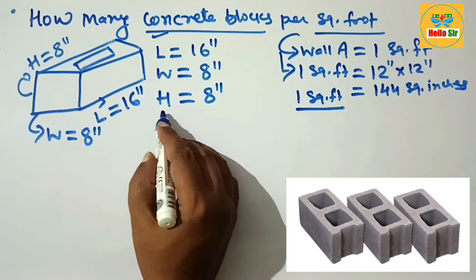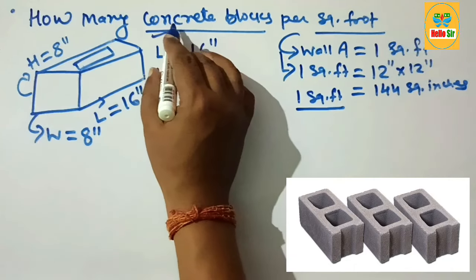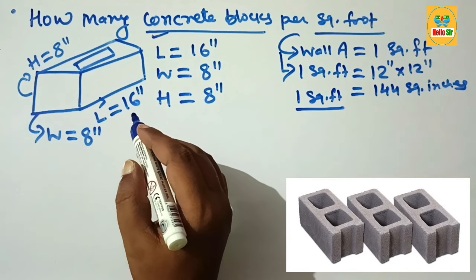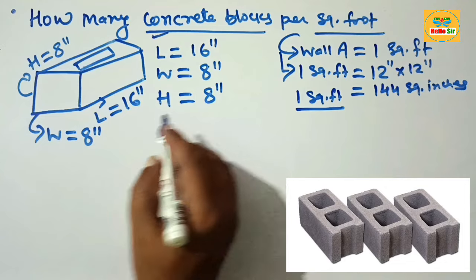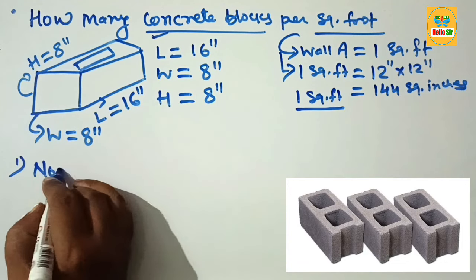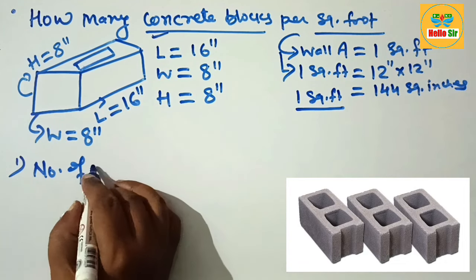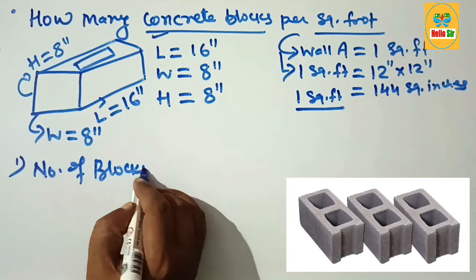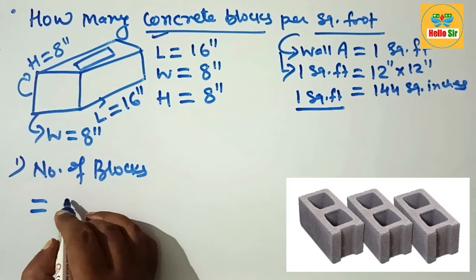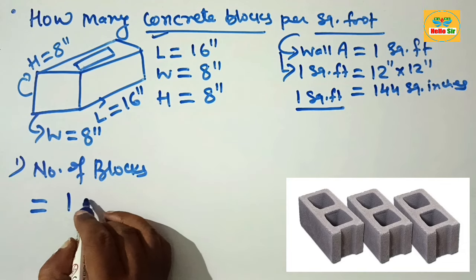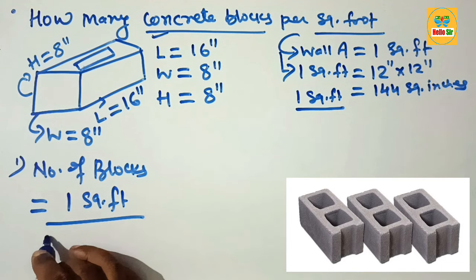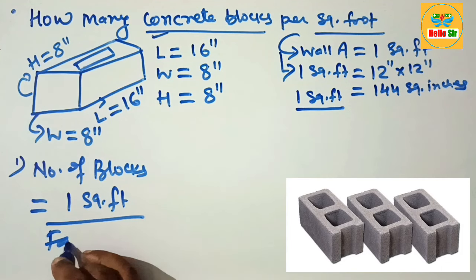To calculate the number of concrete blocks per square footage, use this formula: Number of blocks = Area (one square foot) divided by the face area of one block.